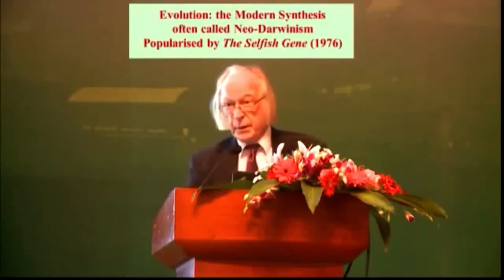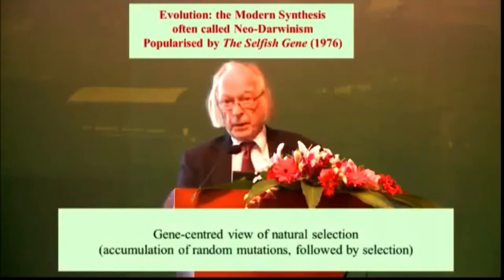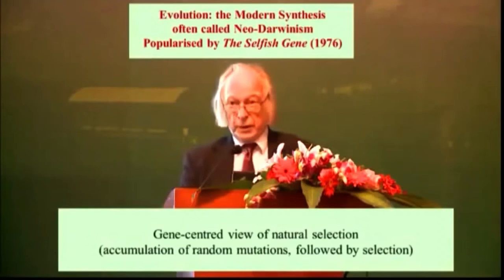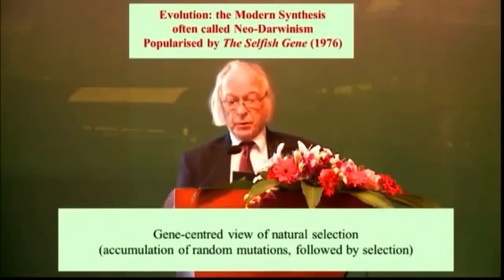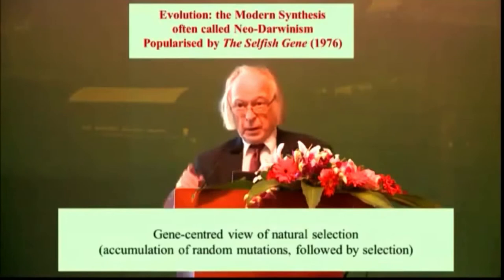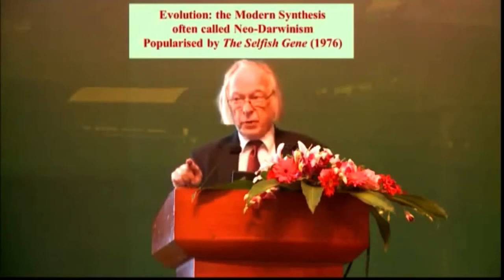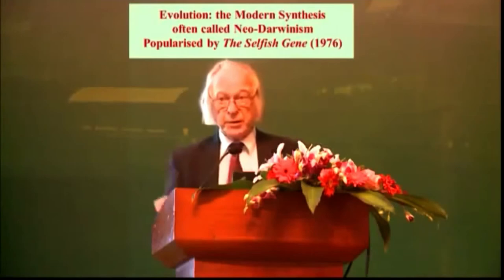So what exactly is the modern synthesis? It's sometimes called Neo-Darwinism, and it was popularized in the book by Richard Dawkins, The Selfish Gene in 1976. Its main assumptions are, first of all, that it is a gene-centered view of natural selection. The process of evolution therefore can be characterized entirely by what is happening to the genome — a process in which there would be accumulation of random mutations followed by selection. Now an important point: if that process is genuinely random, then there is nothing that physiology, nothing that people like you and me, can say about that process. That's a very important point.